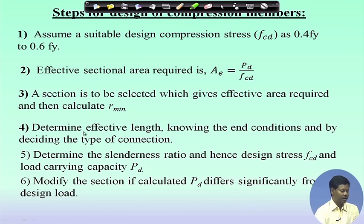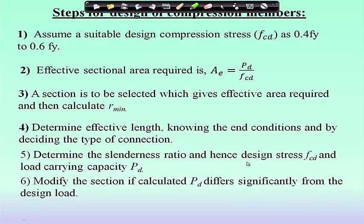Next, knowing the effective length and end conditions, we find out the slenderness ratio L/R minimum. If we know the slenderness ratio, we can find out the Fcd value directly from table 9 or by calculation. Once Fcd is calculated, we can find out the load-carrying capacity. If the load-carrying capacity is more than the external load Pd, the member is fine — the design is OK. Otherwise, we have to choose a higher section and go back to step 3.